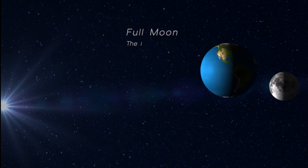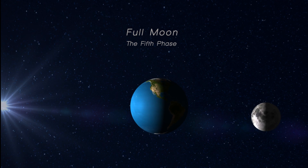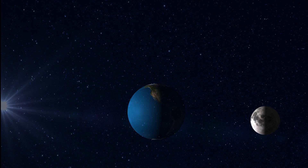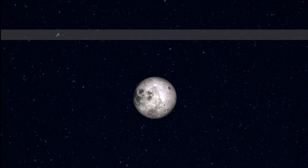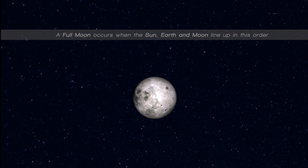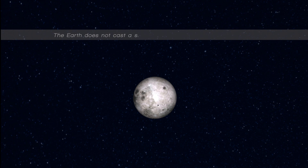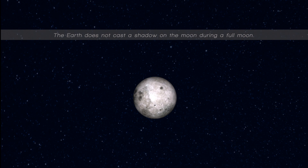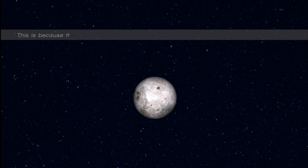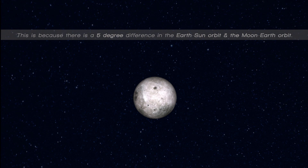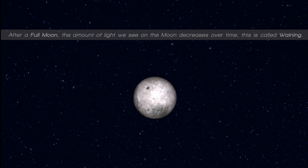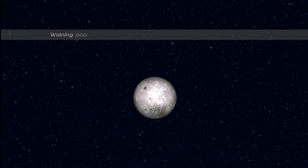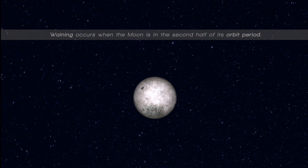Full moon, the fifth phase. This is how a full moon appears when viewed from earth. A full moon occurs when the sun, earth and moon line up in this order. The earth does not cast a shadow on the moon during a full moon. This is because there is a 5 degree difference in the earth-sun orbit and the moon-earth orbit. After a full moon, the amount of light we see on the moon decreases over time. This is called waning. Waning occurs when the moon is in the second half of its orbit period.